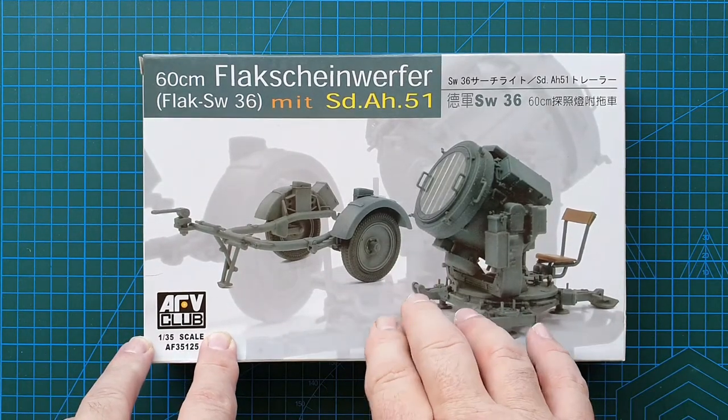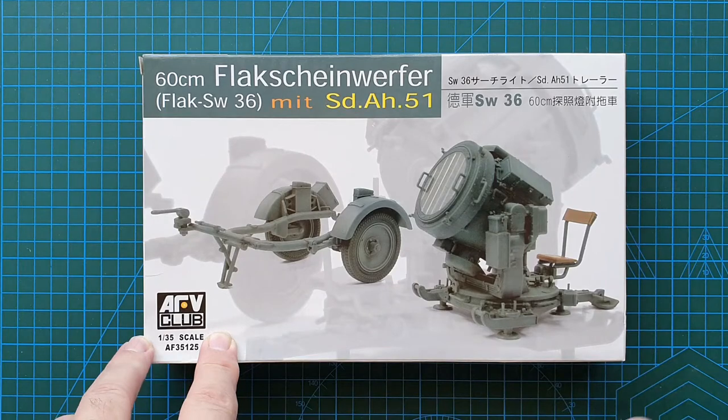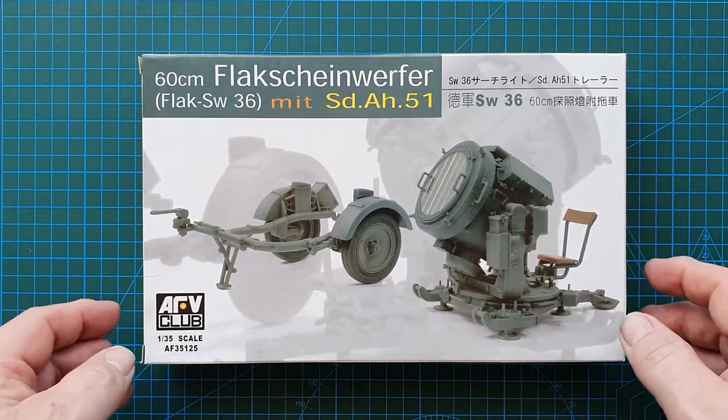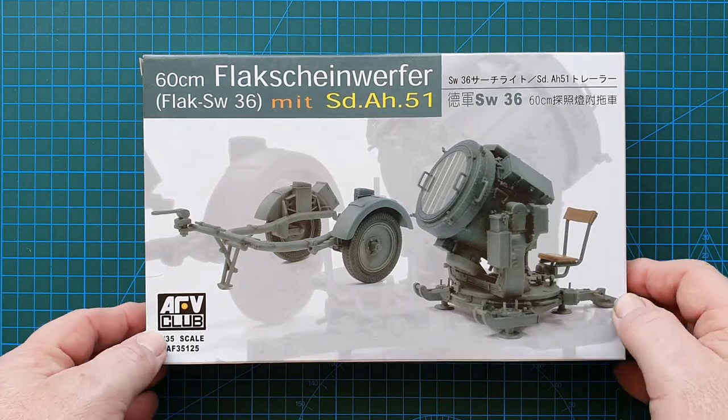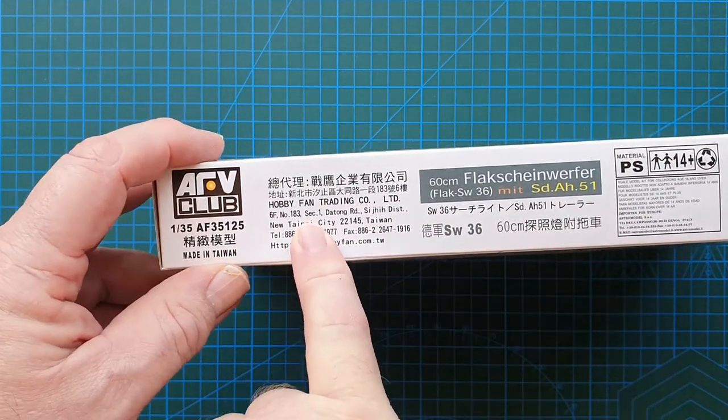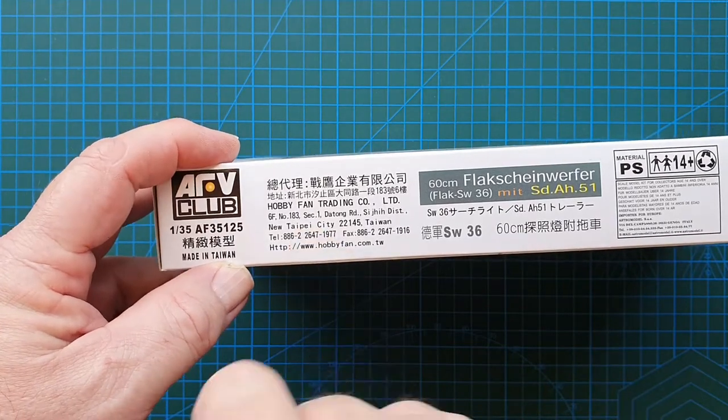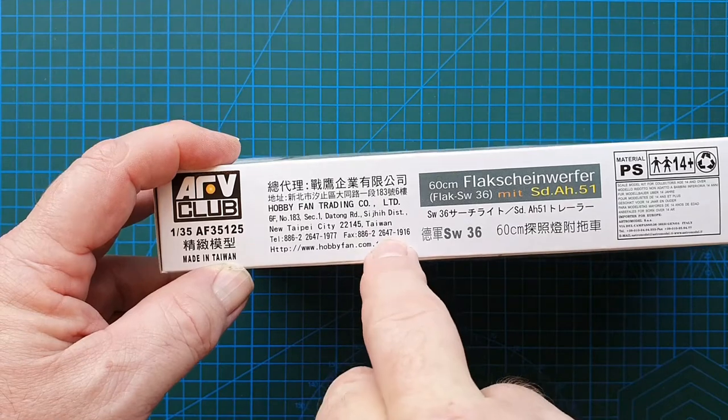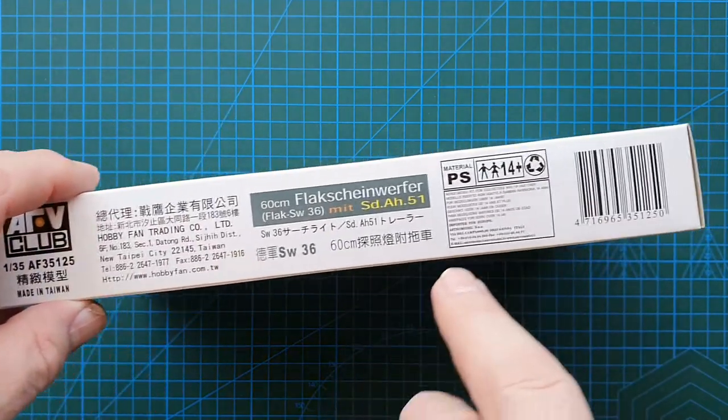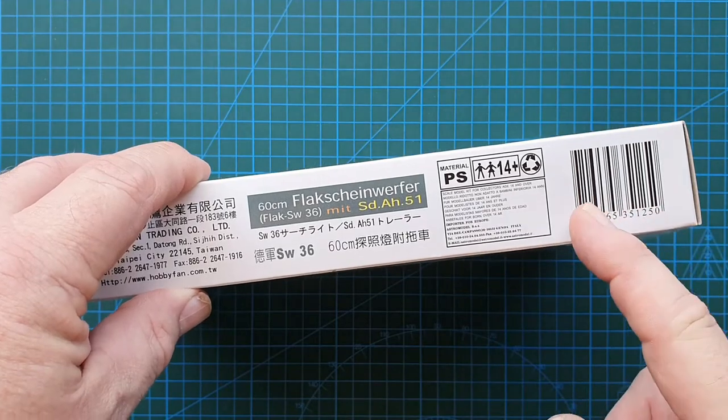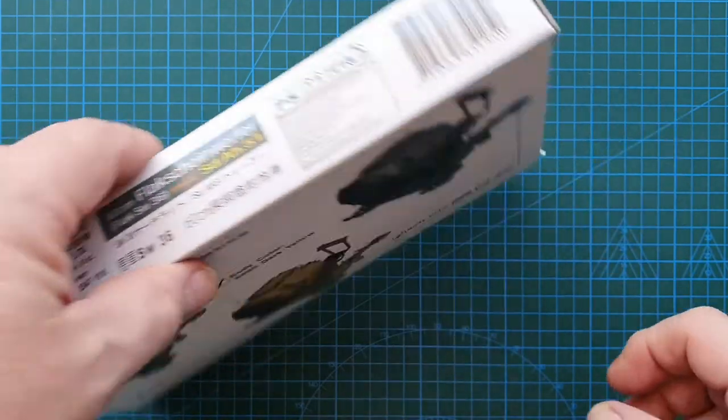AFV Club - I've built some of their kits before, really nice detail, can be a little fiddly but really nice detail. Let's have a look at the box first. On the side there you go, that's their address - basically Hobby Fan Trading Company in Taiwan. Usual 14 plus warnings, no glue, paint included, don't cut yourself, don't glue yourself.